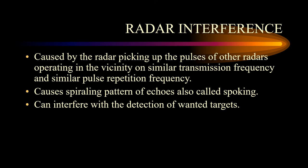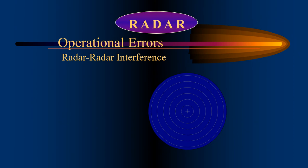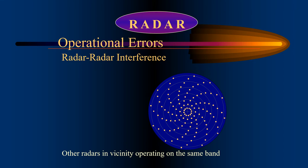Radar interference is caused by the radar picking up the pulses of other radars operating in the vicinity, using a similar transmission frequency and similar pulse repetition frequency. This can cause a spiraling pattern of echoes on the display which can interfere with the detection of wanted targets. On screen you can see an example of radar-to-radar interference, which causes the concept of spoking — that's the pattern that you see on the radar screen.